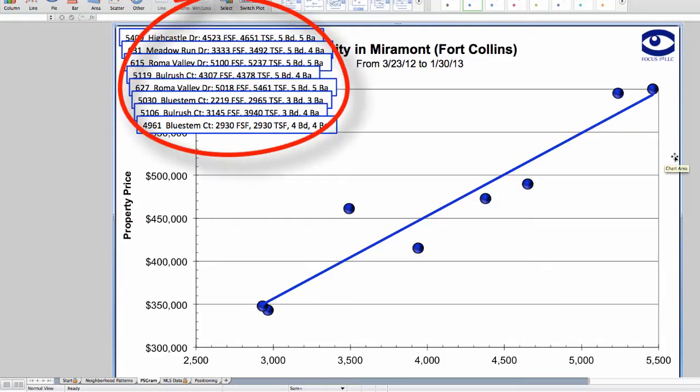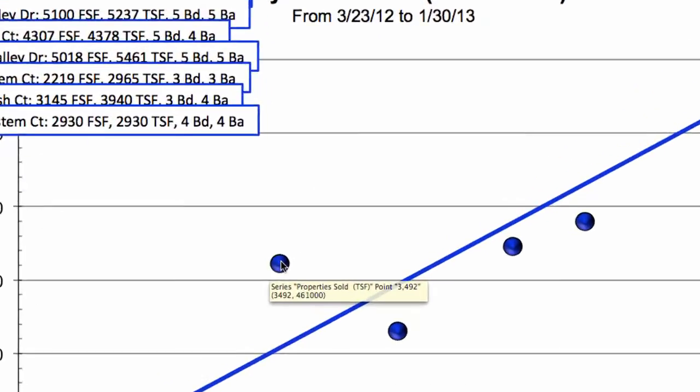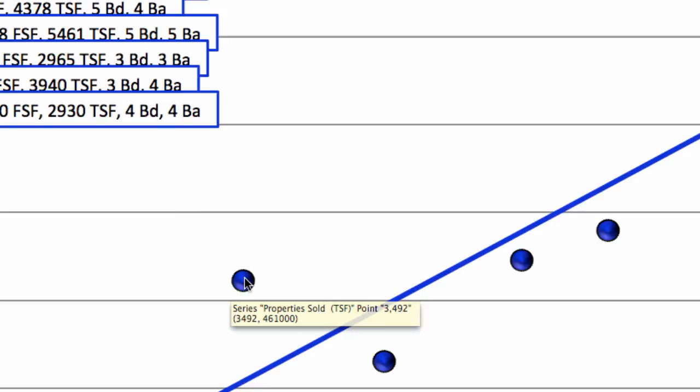Now let's look at the scattergram. As you can see, we now have several boxes on the upper left part of the screen. These are all the text boxes which we created. We don't automatically put them next to data points because we found that if we do, they hide other data points. You can easily find which text box goes with which data point by putting your cursor over a data point and then finding the box that matches. For example, if we put our cursor over this data point, we can see that it has 3,492 total square feet.